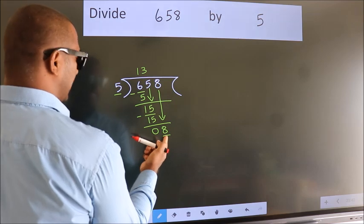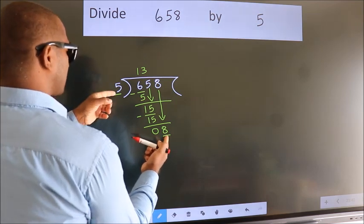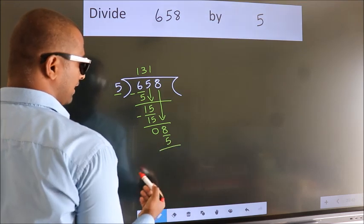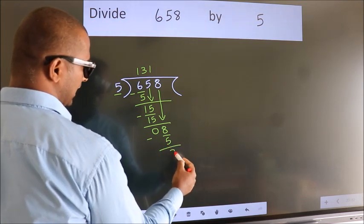A number close to 8 in the 5 table is 5 once 5. Now we subtract. We get 3.